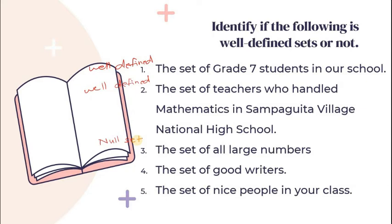Number four, the set of good writers. Number four is also null set. Bakit? Kasi kung para sa akin, yung writer na kilala ko is a good writer, maaaring sa iba, hindi siya magaling. Maaaring iba yung preference nila sa good writer. Number five, the set of nice people in your class. For number five, this is null set.